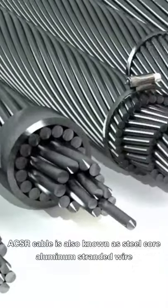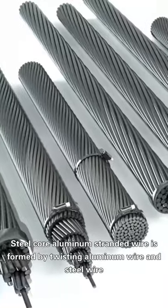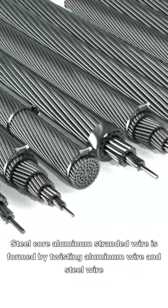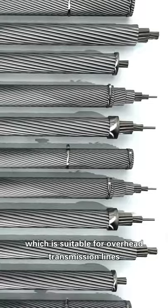ACSR cable is also known as steel core aluminum stranded wire. Steel core aluminum stranded wire is formed by twisting aluminum wire and steel wire, which is suitable for overhead transmission lines.